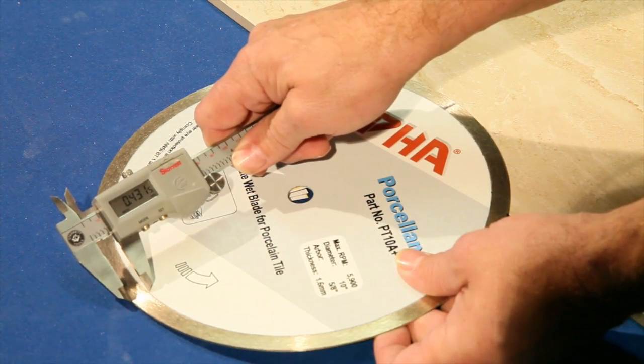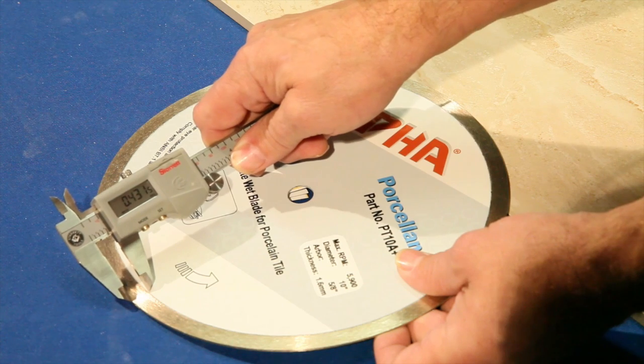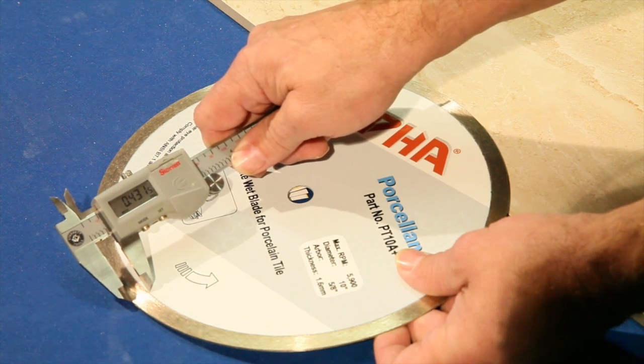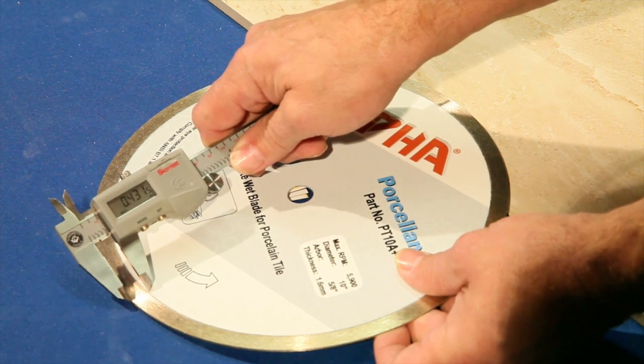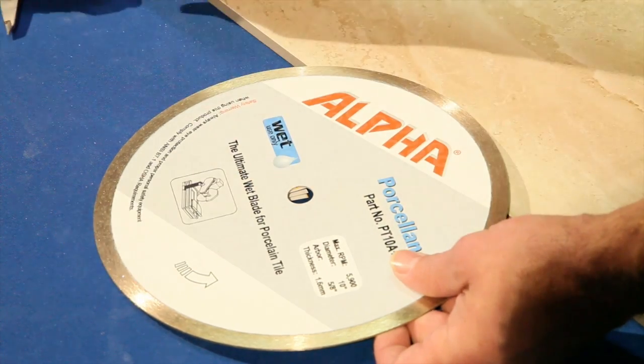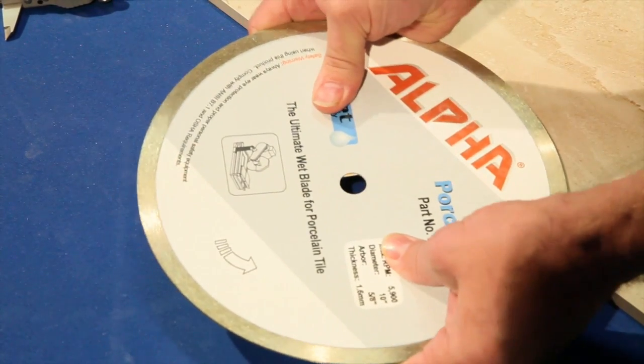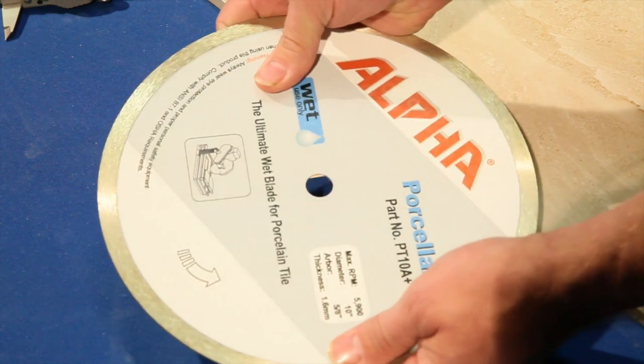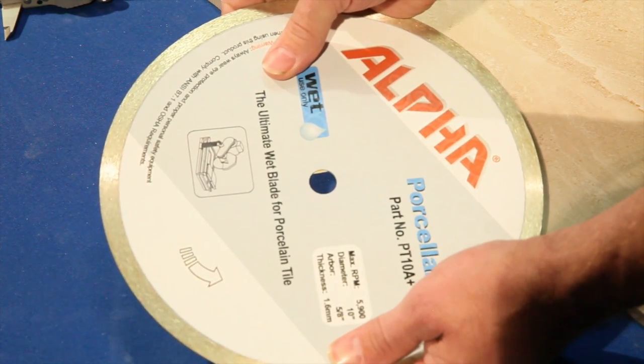So the next blade we're going to talk about is the Alpha blade, also made in Japan. It comes out of the box with a 0.43 diamond height, which is exceptional. The blade has got a thicker core, almost no flex at all, which is really good. So let's go ahead and put it on the saw and see how well it cuts.